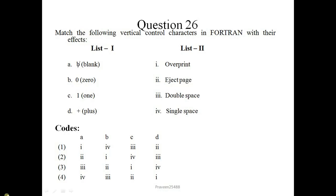Here is question number 26. Match the following vertical control characters in FORTRAN with their effects. In list 1, control characters are given to match with list 2. So blank is for single space, 0 is for double space, 1 is for eject page, and plus is for overprint. So correct option is 4, 3, 2, 1. Answer is 4.